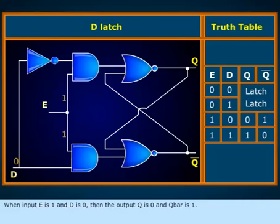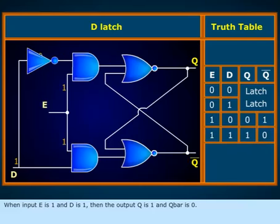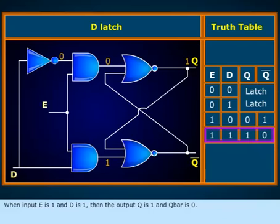When input E is one and D is zero, then the output Q is zero and Q bar is one. When input E is one and D is one, then the output Q is one and Q bar is zero.